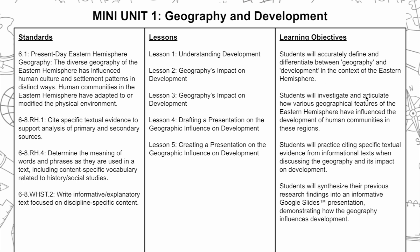Students will investigate and articulate how various geographical features of the eastern hemisphere have influenced the development of human communities in those regions — which connects to R4 and R1. Students will practice citing textual evidence from informational text when discussing geography and its impact on development — another R1 standard. And students will synthesize their research findings into an informative Google Slides presentation demonstrating how geography influenced development — which aligns with W2 and the content standard.